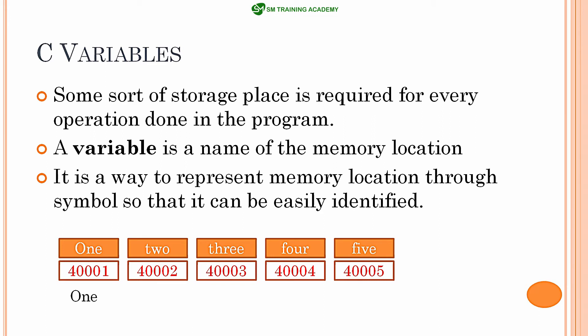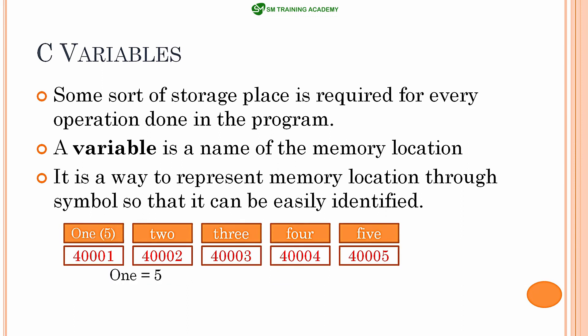For example, let us take the same five memory locations starting from 4001 to 4005, and I am naming these five memory locations with the names one, two, three, four, five. If I want to write some data to memory location 4001, I will use the variable name 'one' for writing data to that memory location. If I write one = 5, the number five will be stored in memory location 4001.